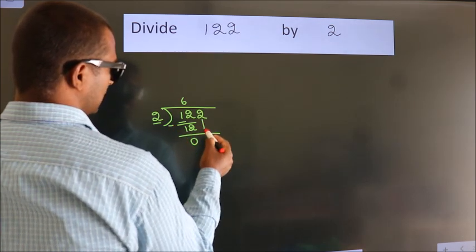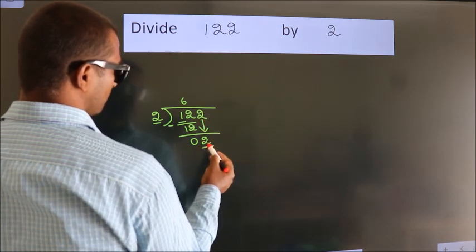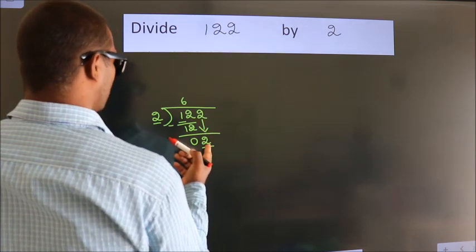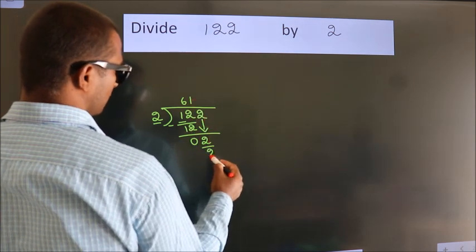After this, bring down the beside number. So 2 down. So 2. When do we get 2? In 2 table. 2 1's 2.